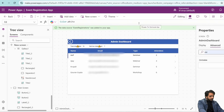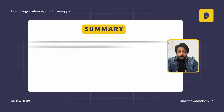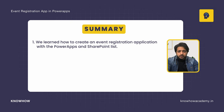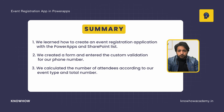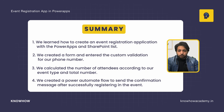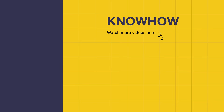In this video, we learned how to create an event registration application using Power Apps and a SharePoint list. We built a registration form with custom phone number validation, an admin dashboard showing attendee counts by event type and total, and a Power Automate flow to send confirmation emails after successful registration. Thank you for choosing KnowHow Academy as your IT source — stay curious and keep learning.